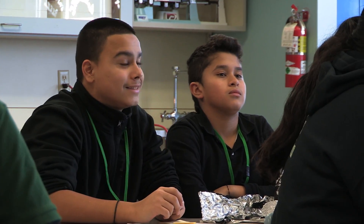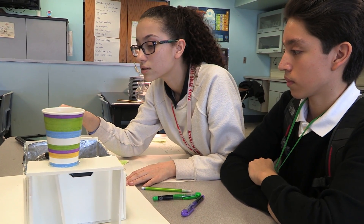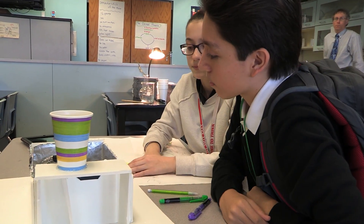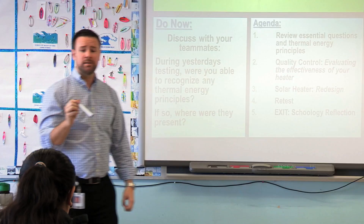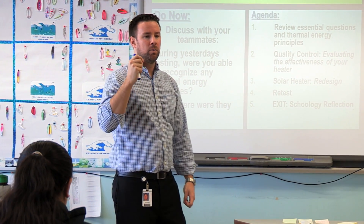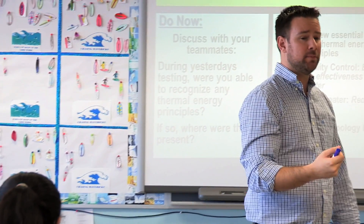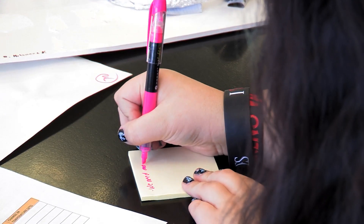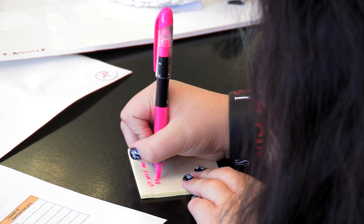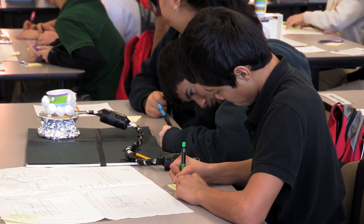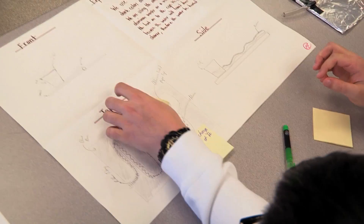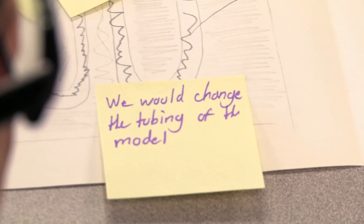The ultimate goal was to identify a variable which we would want to change in the end to make our prototype as effective as it could possibly be. I want you to identify or make a claim by writing it on that sticky note — one thing that you would change about your prototype to make it most effective. They documented on a sticky note and physically stuck that to their blueprint addressing the area of need.